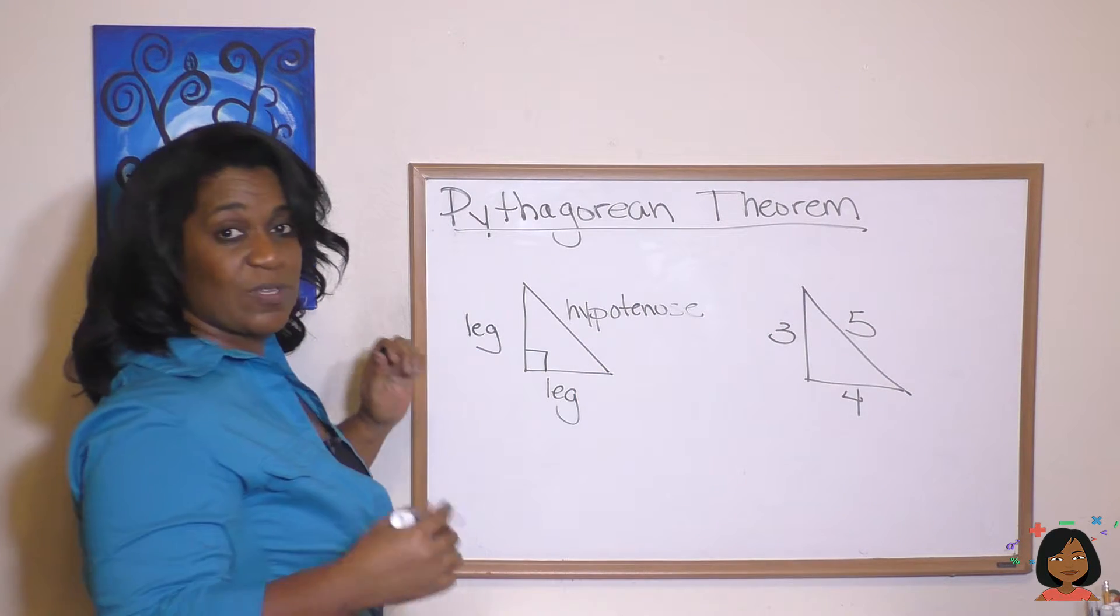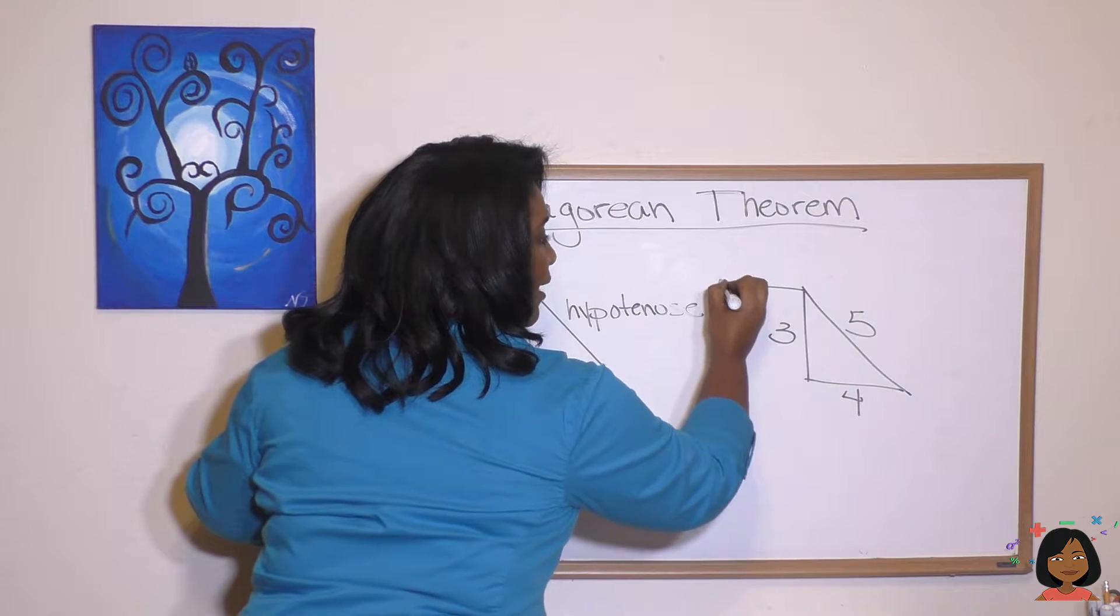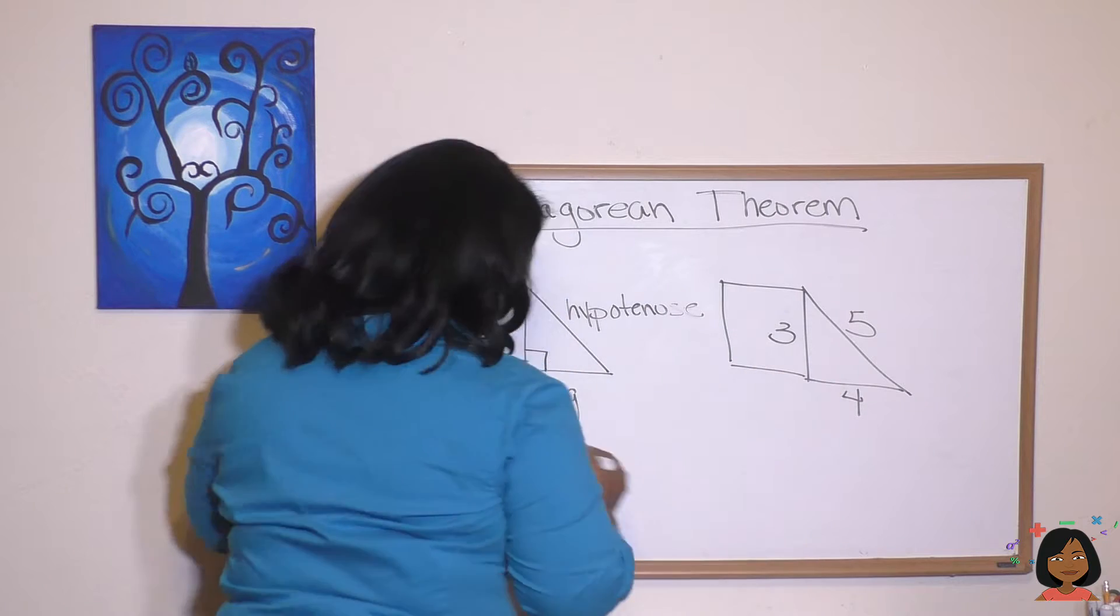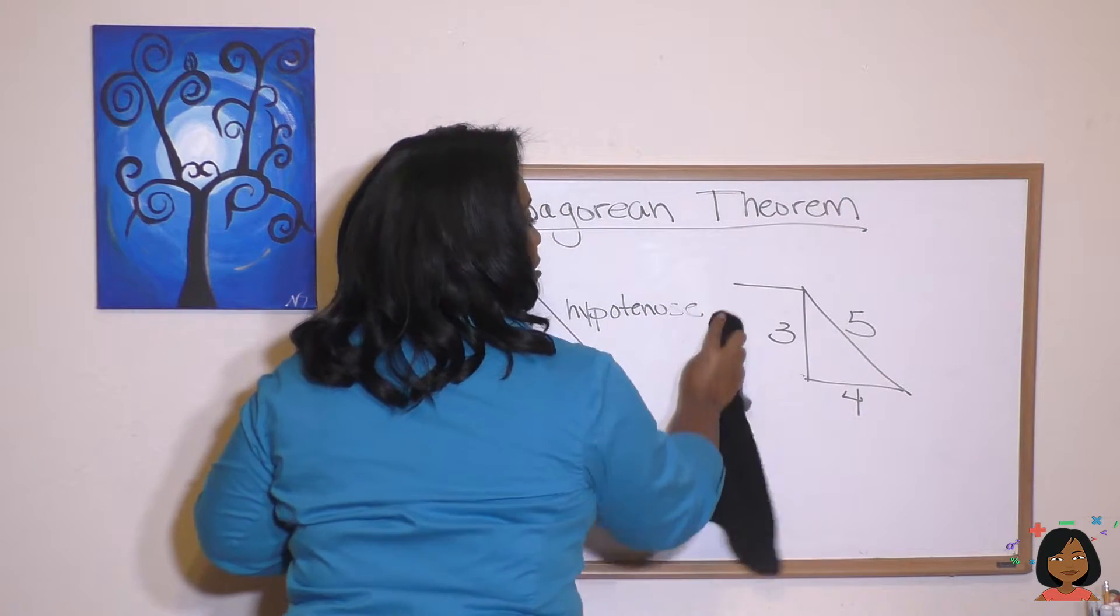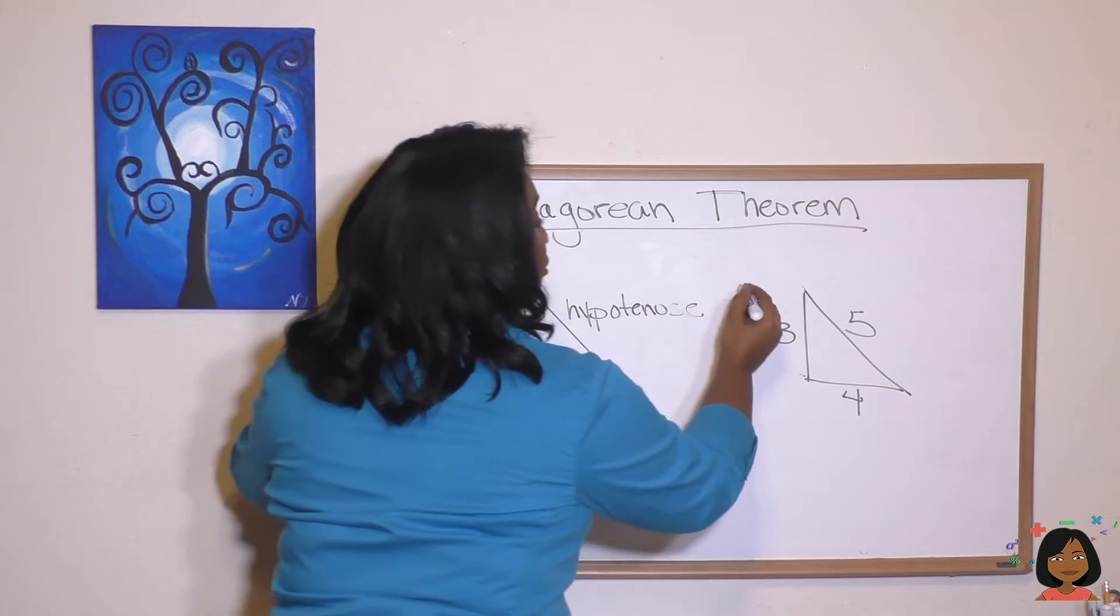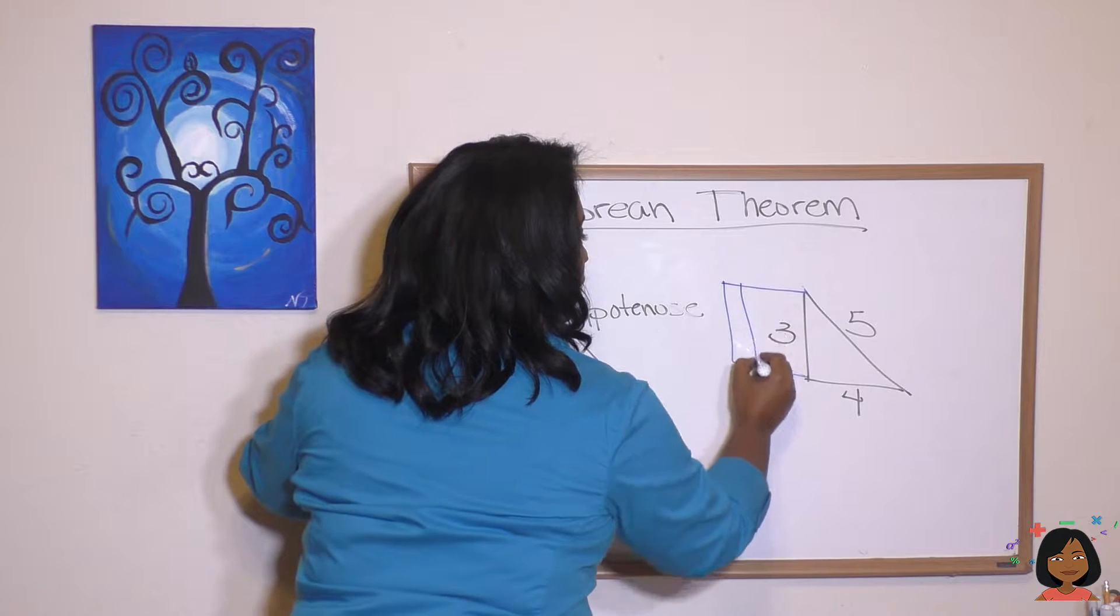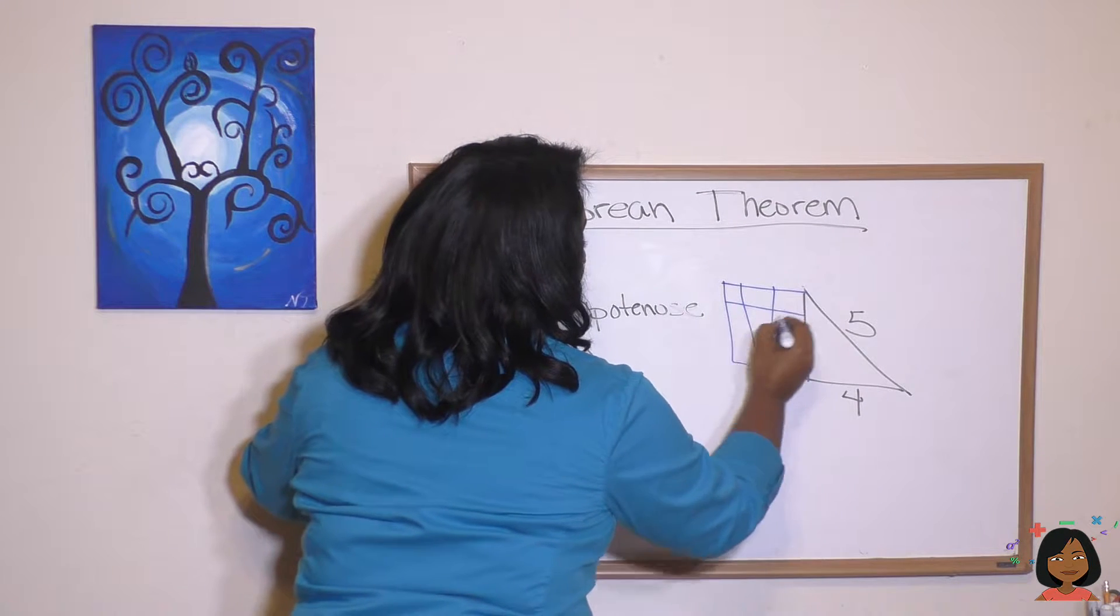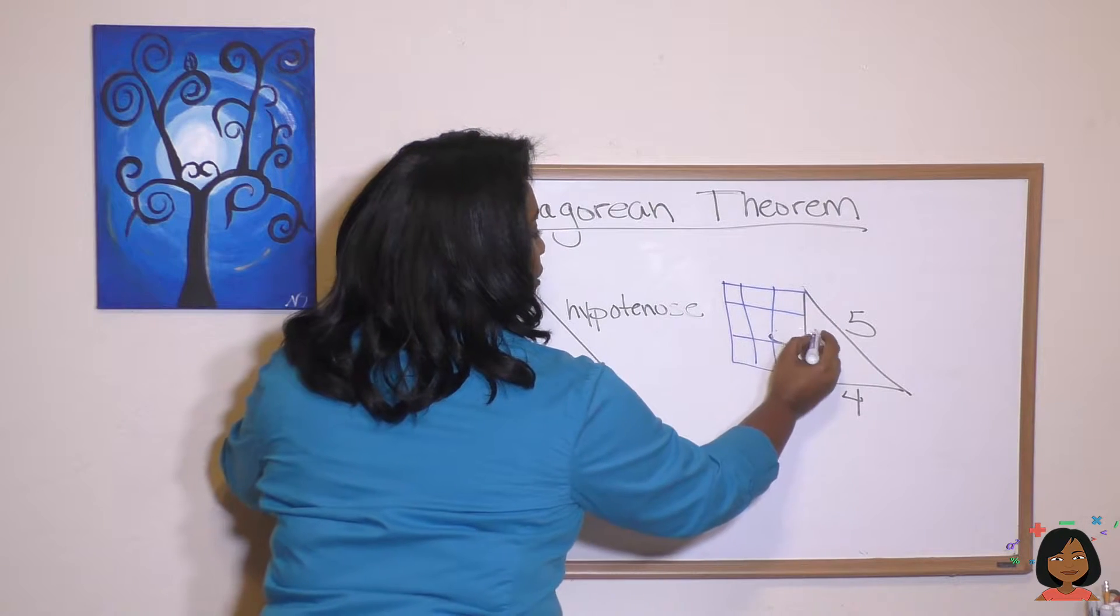So when he says the square of this side, he literally is talking about making a 3 by 3. You know, I'm going to use a different color. So we're going to make a 3 by 3 square. I know it's a little rough, but there you go. There's my 3.